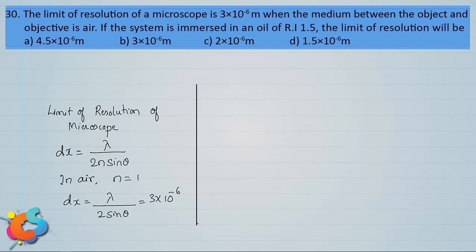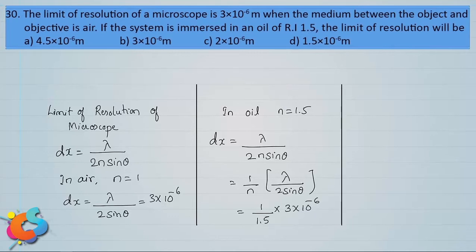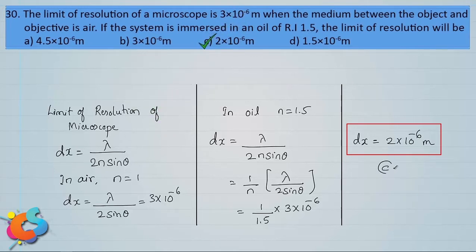When the microscope is immersed in oil of refractive index 1.5, the limit of resolution formula becomes dx = λ / (2n sinθ) = (1/n) × (λ / 2 sinθ). Since λ / (2 sinθ) is already 3 × 10⁻⁶, we get dx = (1/1.5) × 3 × 10⁻⁶ = 2 × 10⁻⁶ meter, or 2 micrometer. This is option C, the correct answer.